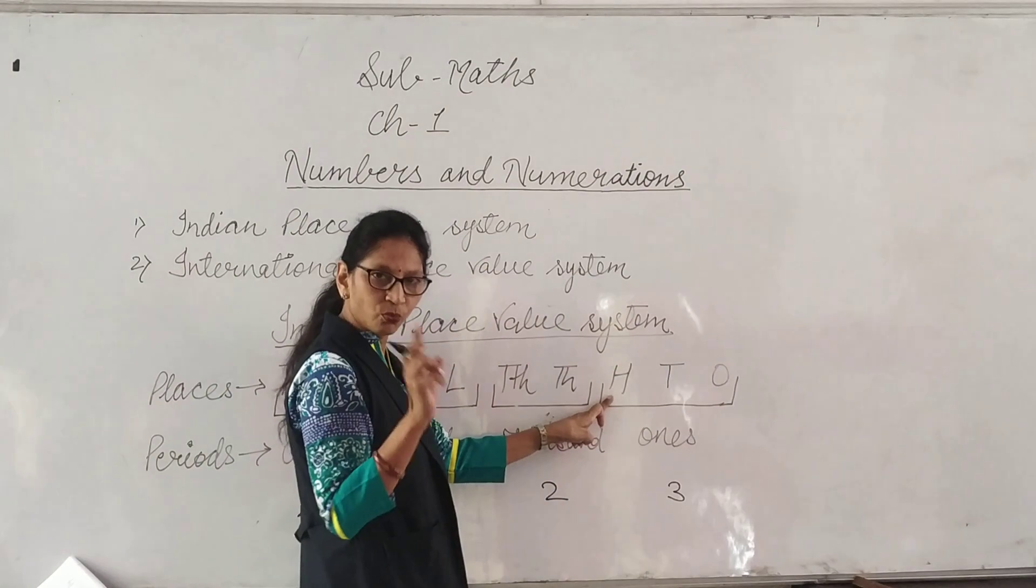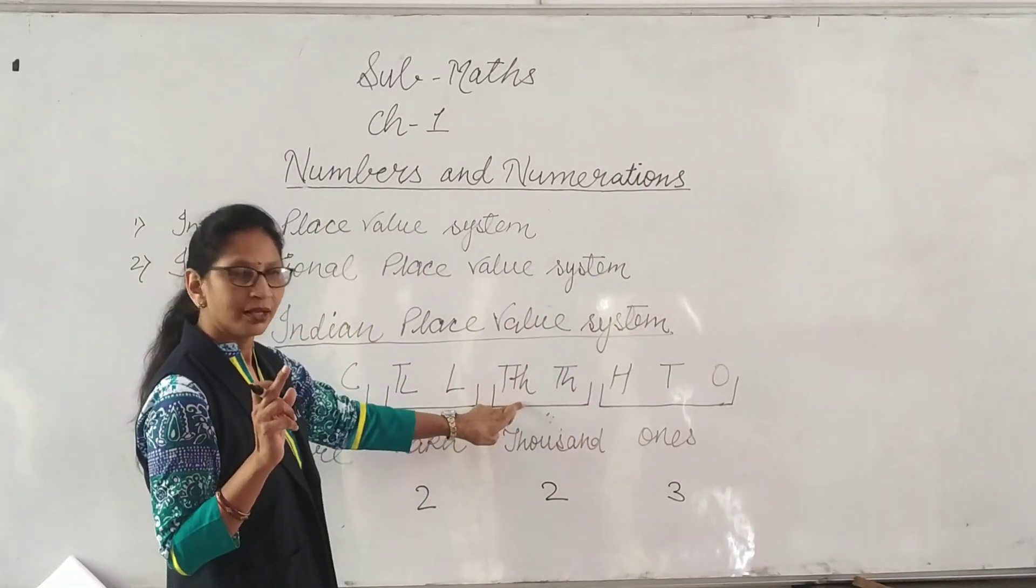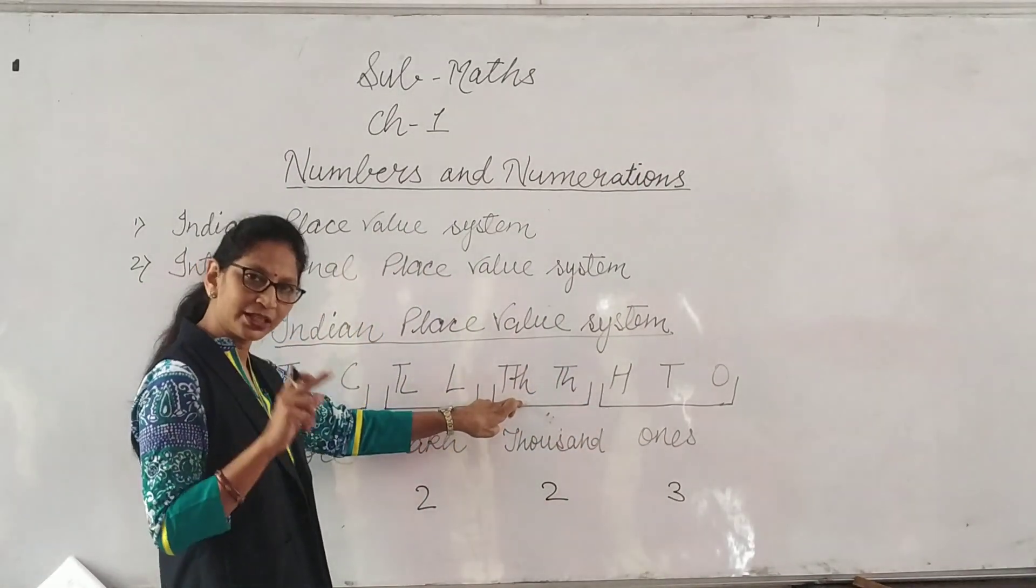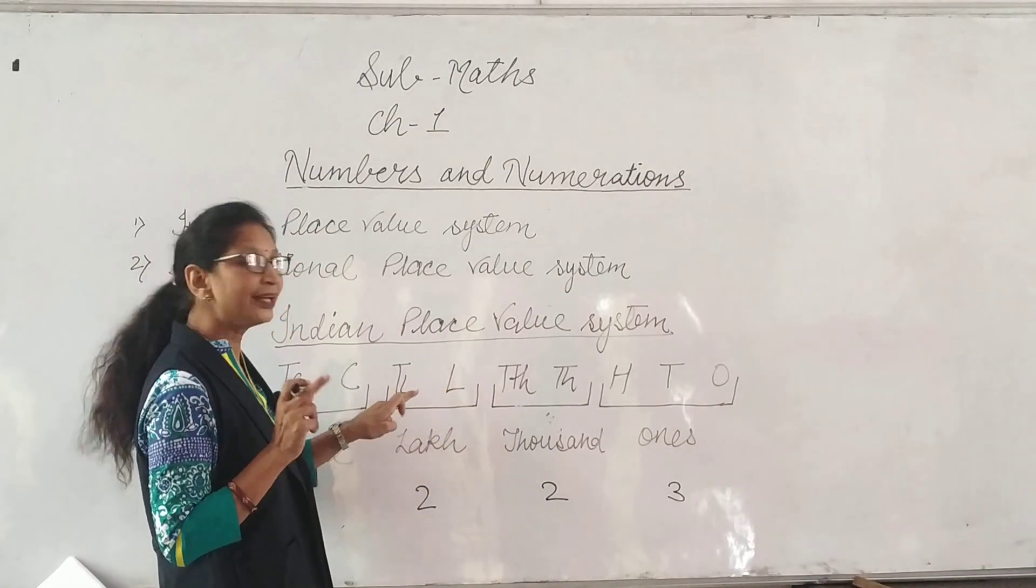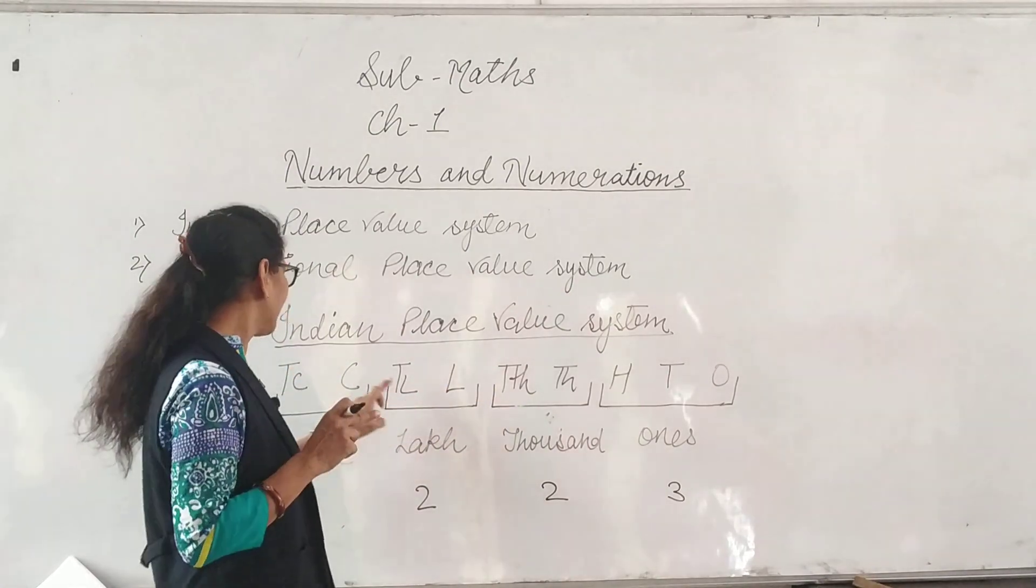These are 1 group. Next, 1000, 10000 is another 1 group. Lakh and 10 lakh is another 1 group.